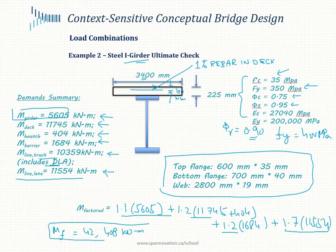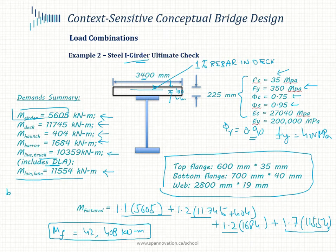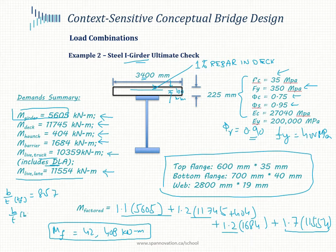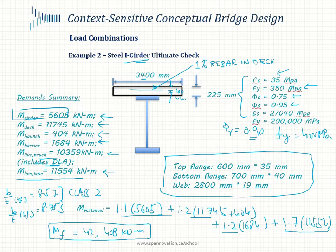This gives a factored bending moment of 42,408 kN·m — that is the factored demand. Looking at the b/t ratios: for the top flange we get 8.57 and for the bottom flange 8.75. Both satisfy Class 2, which means we can use a fully plastic section.